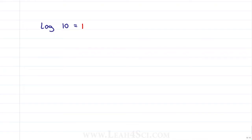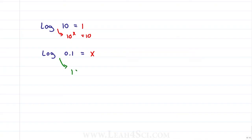Let's mix it up: log of 10 means 10 to the power of x equals 10, and that's 1, because any number raised to the first is equal to itself. What about log of 0.1? Treat it the same way: 10 to the power of x equals 0.1. The easiest way to solve this with a decimal is to ask yourself how to turn that decimal into scientific notation — how do I express it as an exponent?